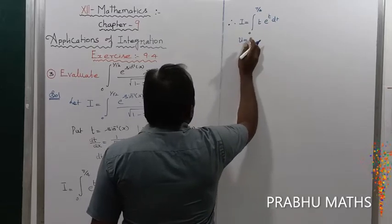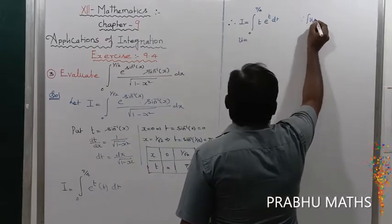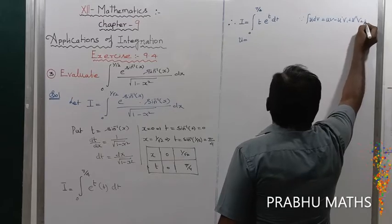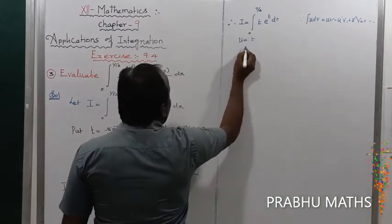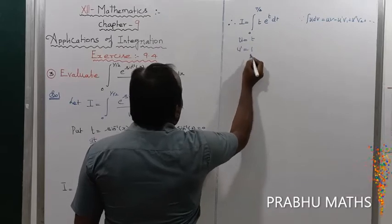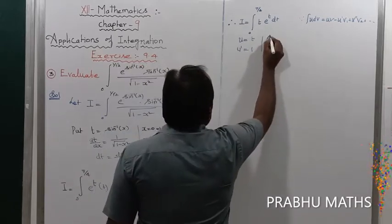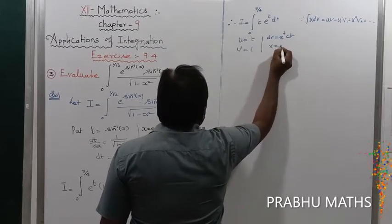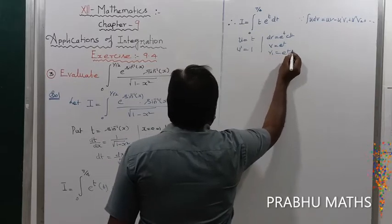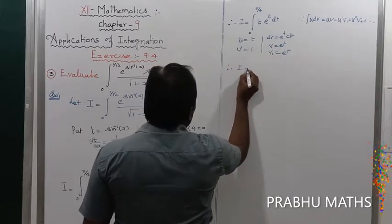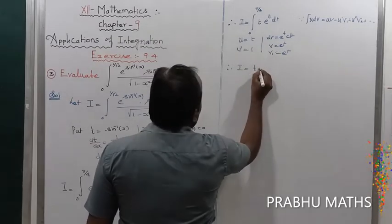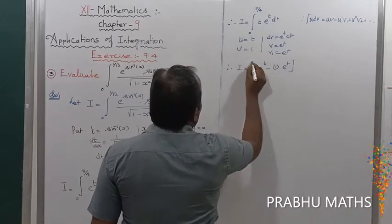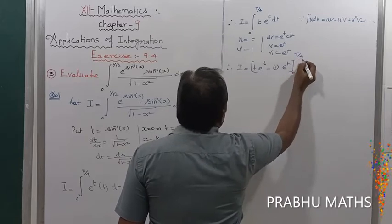Using the formula: integral of u dv equals uv minus u-dash v1 plus u-double-dash v2, and so on. Let u equal t, so u-dash equals 1, u-double-dash equals 0. And dv equals e to the power t dt, so integrating, v equals e to the power t, and v1 equals e to the power t.